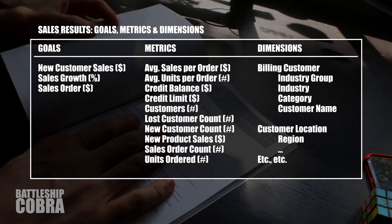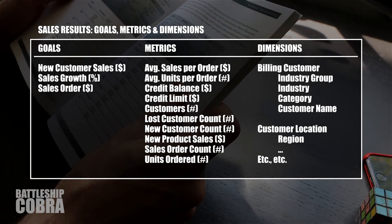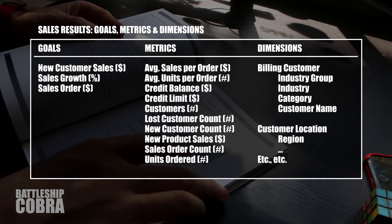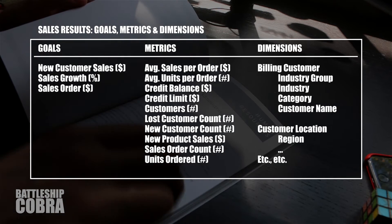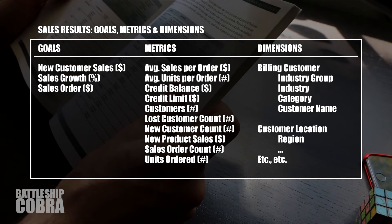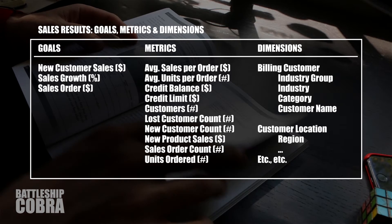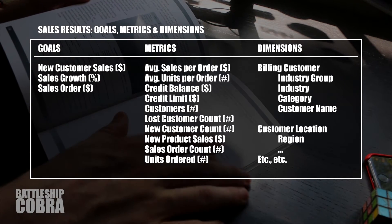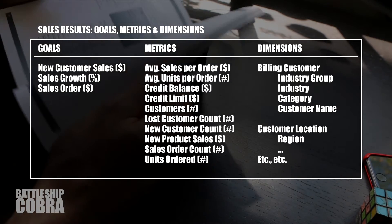Metrics are what support and drive you toward your goals — specific things you can measure. For Sales Results, those include: Average Sales per Order (dollars), Average Units per Order (count), Credit Balance Total (dollars), Credit Limit (dollars), Customers (count), Lost Customer Accounts (count), New Customer Accounts, New Product Sales, Sales Order Count (count), and Number of Units Ordered. When combined, these metrics push towards those goals.